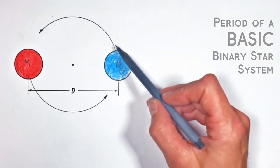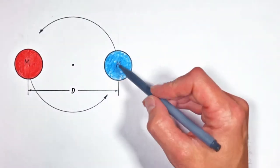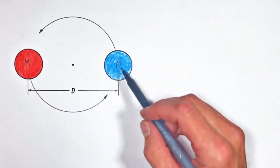All right kids, today I'm going to show you how to solve for the period of orbit for an object which is in a binary star system.